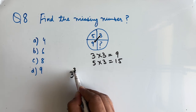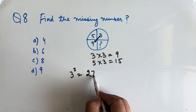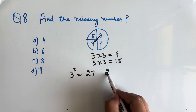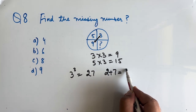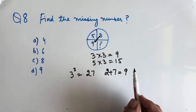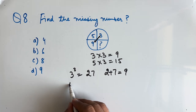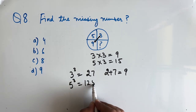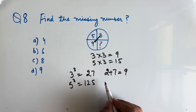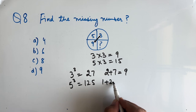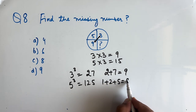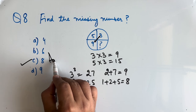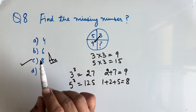Now 3 cubed is 27, and if we find the sum of digits, 2 plus 7 is 9. In the similar way, 5 cubed is 125, and if we find the sum of digits, 1 plus 2 plus 5 is 8. So option C, 8 will be the correct answer.